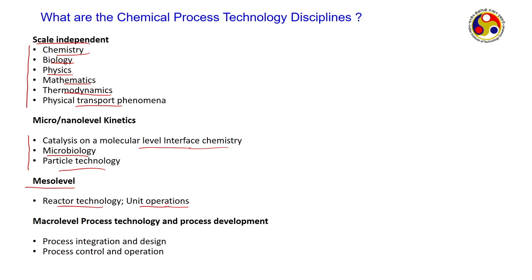Unit operations include diffusion, distillation, extraction, and absorption — these are part of any chemical process. For example, if you want to separate out a component by extraction, after extraction you have two phases: one solute-rich and one solvent-rich. You don't throw out the solvent; you take out the clean solvent and recycle it — keeping the same solvent for several cycles. These are called unit operations.